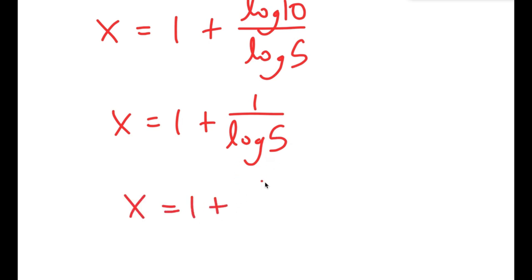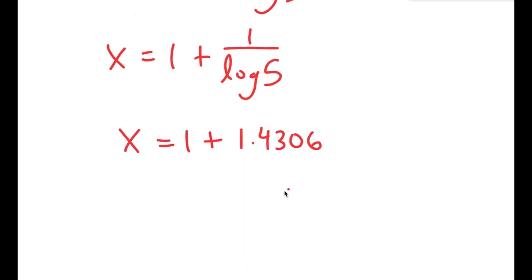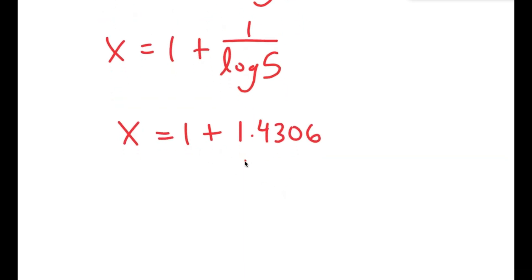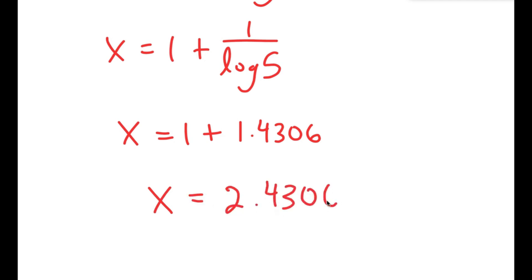And 1 over log 5 is approximately 1.4306. So I get x equals 1 plus 1.4306, which equals 2.4306. So this is my answer.